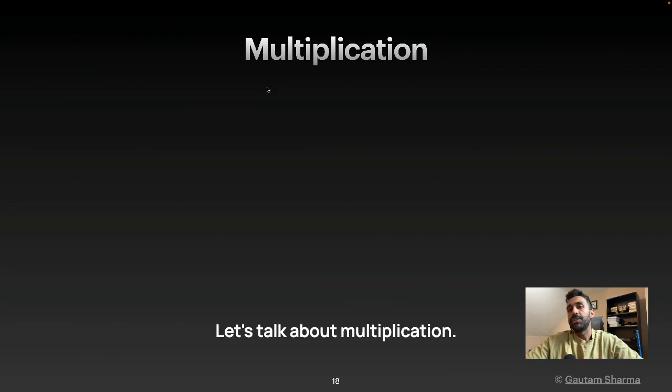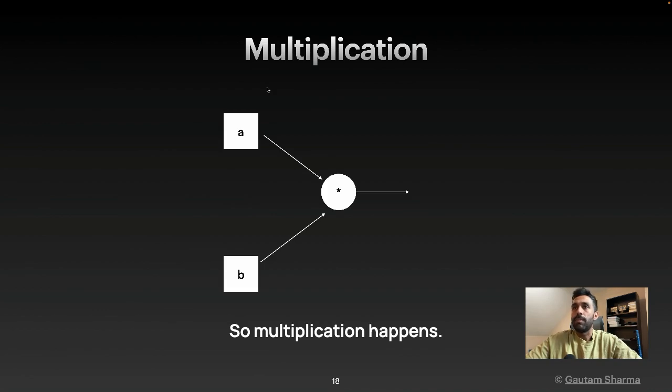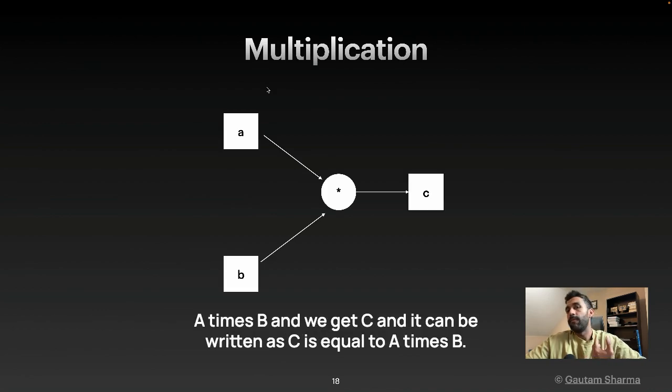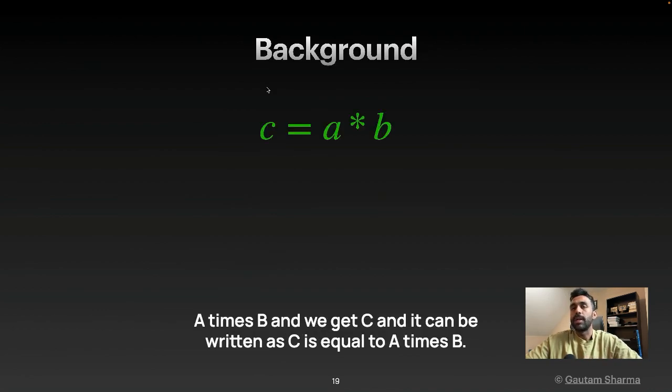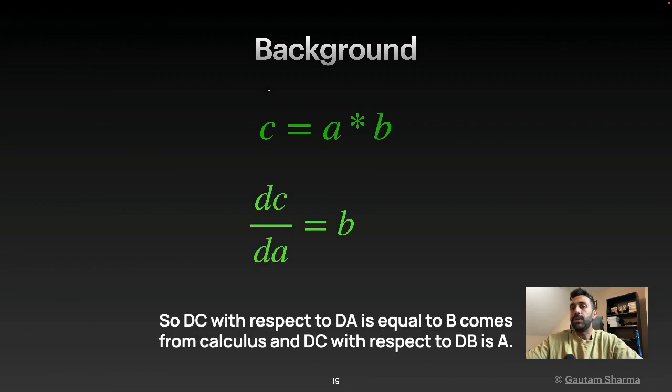Let's talk about multiplication now. That's our second primitive operation. So multiplication happens A times B and we get C. And it can be written as C is equal to A times B. So DC with respect to DA is equal to B. That comes from calculus. And DC with respect to DB is A.